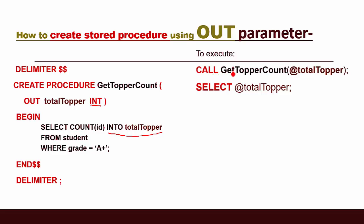Inside the brackets we write the name of the output parameter — total_topper. We then use a SELECT statement with @total_topper to retrieve the output. Once we execute it, it will give us the result of the OUT parameter — the number of toppers who got A+.